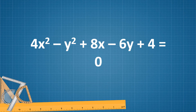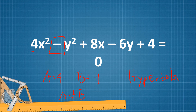Next, A equals 4 and B equals negative 1, since those are the numerical coefficients of x squared and y squared respectively. Since A and B are not equal, we choose between ellipse or hyperbola. This is a hyperbola because A and B have unlike signs. Since 4 is positive and it is the numerical coefficient of x squared, the orientation is horizontal.